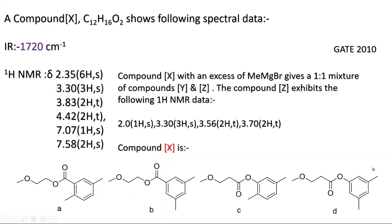They have given four options for compound X and one will be correct. Now if you see the IR data at 1720 cm⁻¹, if you see all the options we have one group that is an ester group. So this IR data gives us that information only — we don't have much more information from IR. Now we will look into the ¹H NMR, where we have six chemical shift values.